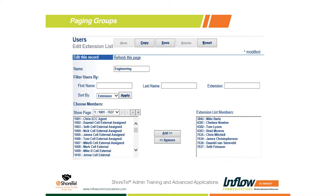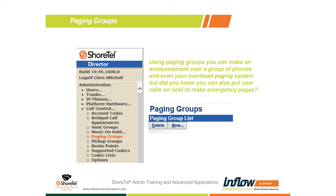The next step is assigning a phone number to the extension list — that's where pager groups come in. An extension list has no extension number on its own, so a pager group assigns an extension to it and controls that extension list. Expand Call Control and go to Pager Groups, where you can modify, delete, or add new pager groups.